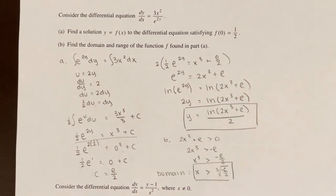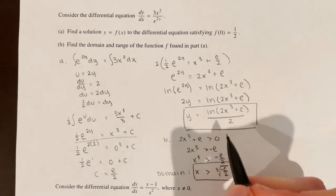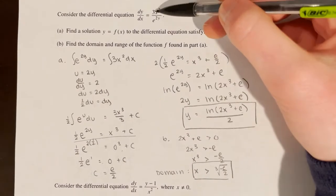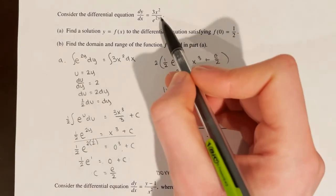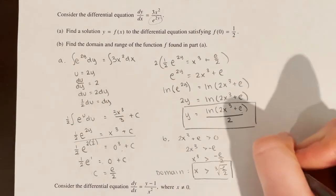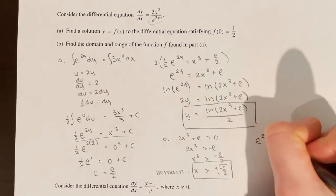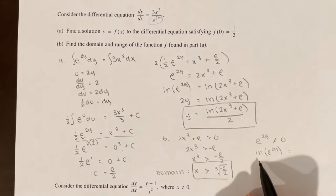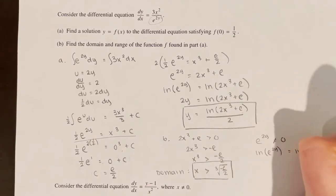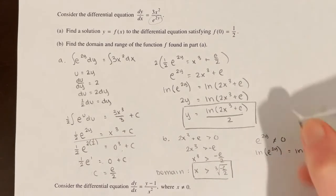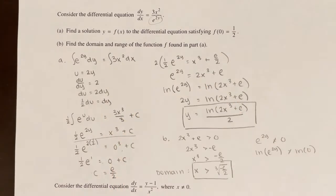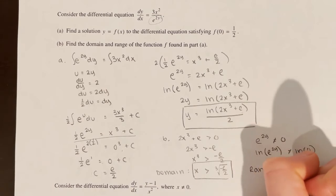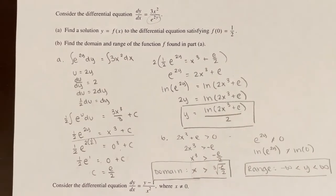For the range, looking at the original differential equation dy/dx = 3x²/e^(2y), the denominator e^(2y) must not equal zero. When you try taking ln of both sides, ln(0) is undefined, confirming e^(2y) ≠ 0. Therefore, there is no restriction on y, and the range is all real numbers (-∞, ∞).